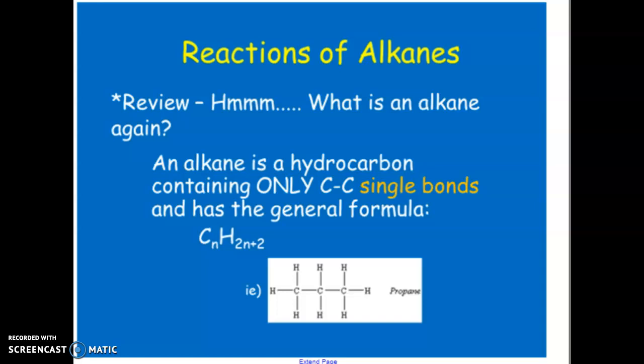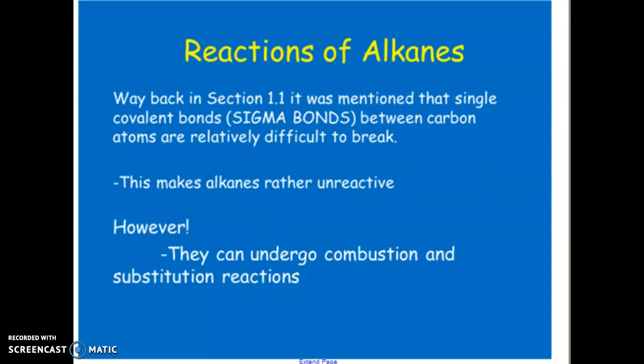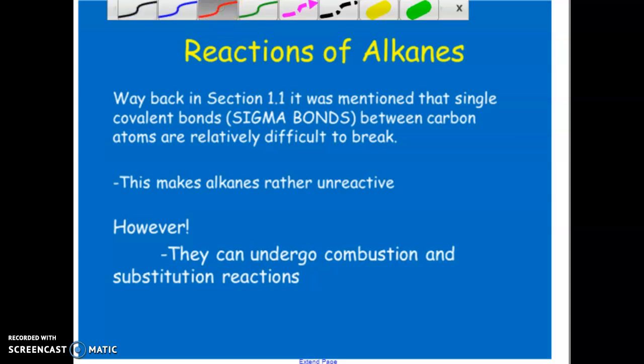Just to review: an alkane is a hydrocarbon that has only single bonds in the carbon groups — for example, propane, methane, or octane. It is saturated, completely filled with hydrogens with single covalent bonds. When we have a single covalent bond, it's an overlapping of orbitals — those sigma bonds from unit one. Sigma bonds are relatively stable, so they take a little more energy to break, which makes alkanes relatively unreactive.